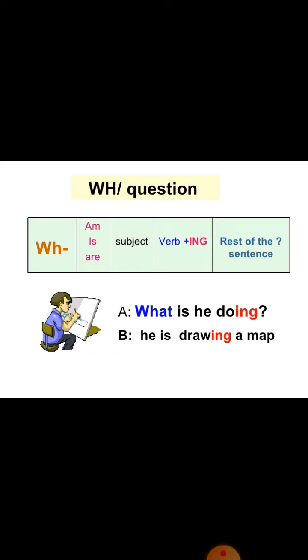For wh questions, the wh words are: what, where, why, when, how, which — plus ismr plus subject plus ing form of verb plus object. For example: What is he doing? He is drawing.